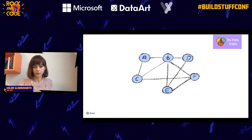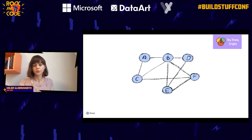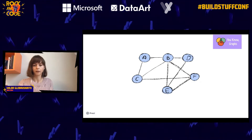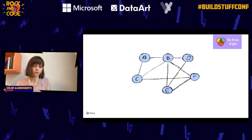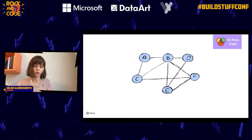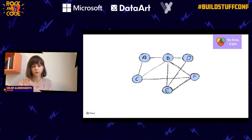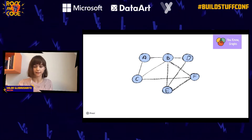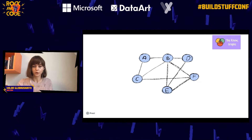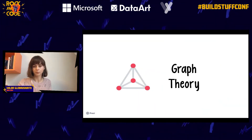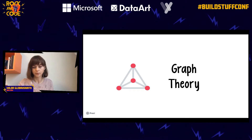A good thing about having such a structure is that we can model many things with it. There's a whole side of mathematics that analyzes and solves problems in such structures. By mapping our real-life problems onto these abstract structures, we can solve them using the abstract solutions that are already invented.